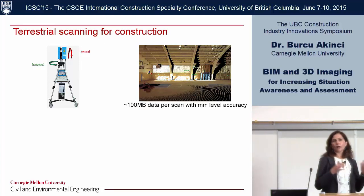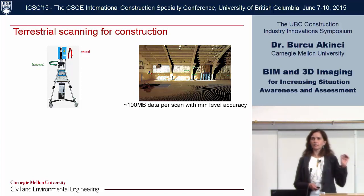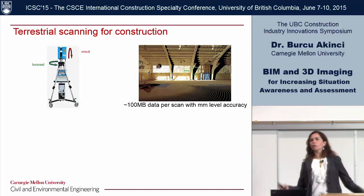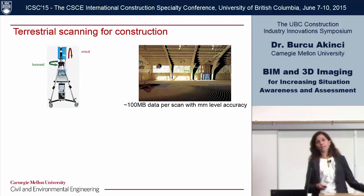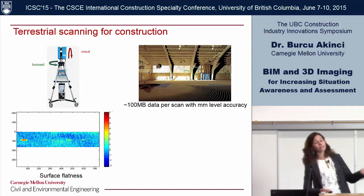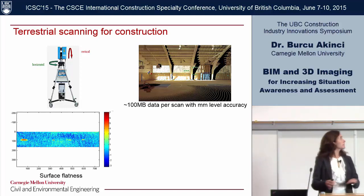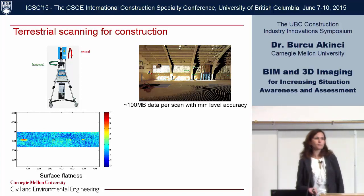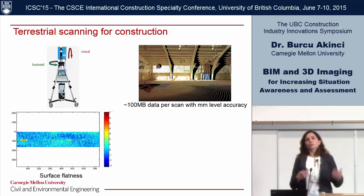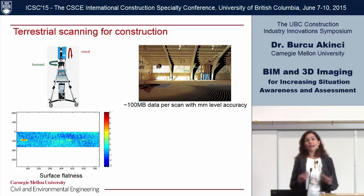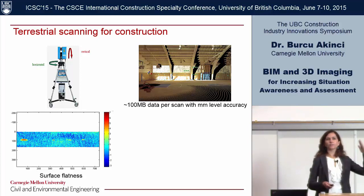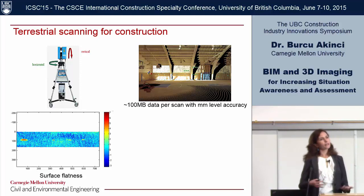We were fascinated by terrestrial scanning and its capabilities. The promise was 100 megabytes of data with millimeter-level accuracy. But the problem is that accuracy is at the point level, and as engineers we really care about features — how flat is my surface? Bombardier came to us needing one-eighth of an inch accuracy on surface flatness for guideway systems. We did a bunch of experiments to see whether we could detect those deviations. It turns out it's not that easy — translating point accuracy to features we care about requires a lot of research and experiments.